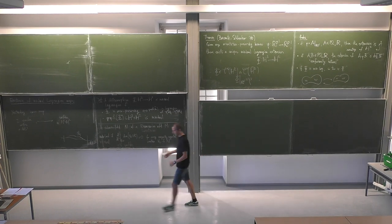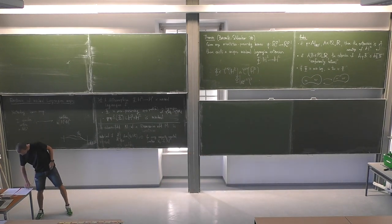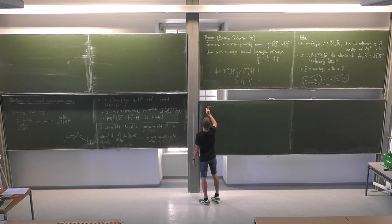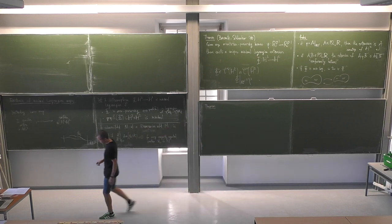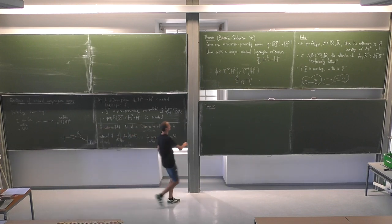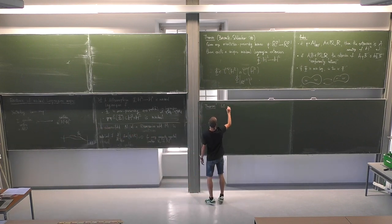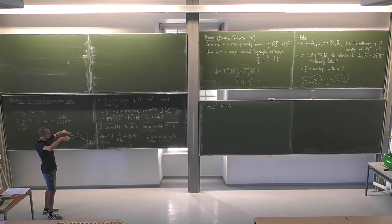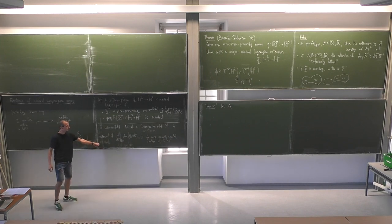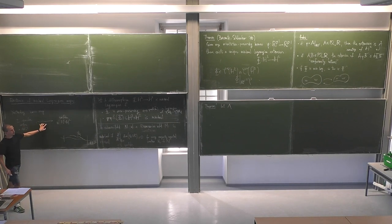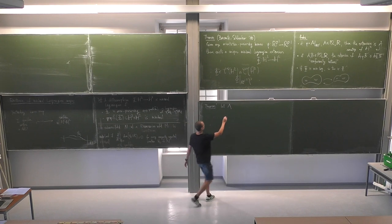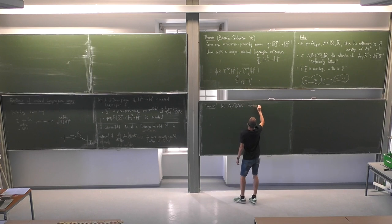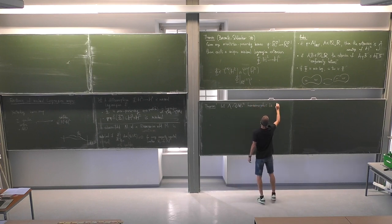The proof will be based on a theorem about existence of maximal surfaces. Let lambda be a subset of anti-de Sitter space homeomorphic to a circle S1. We define condition star: for any three points x, y, z in lambda, their span does not contain a negative definite plane. This lambda lives in the boundary of ADS3, which is the projectivization of the null cone.